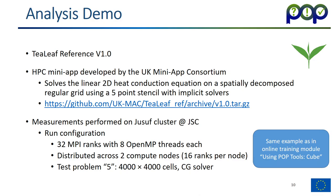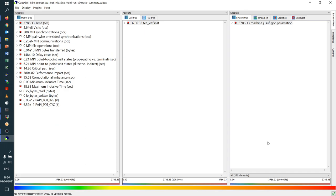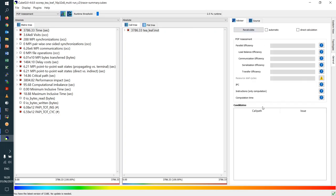To show how the Cube advisor works and looks, I'm using a more interesting example — the TeaLeaf mini-app measurement, the same one used in the POP online training on using POP tools Cube. This is how it looks when you start up Cube on this measurement. To bring up the Cube advisor, go to the right side tabs, click on 'General', and you see the Cube advisor with a POP assessment showing up.